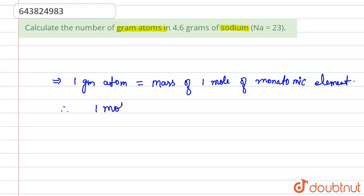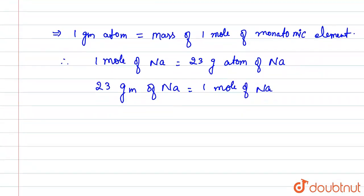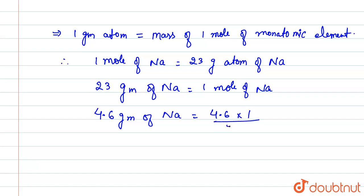Therefore, 23 grams of sodium (Na) is equal to 1 mole of Na. Now, the question is asking for 4.6 grams of Na. So, 4.6 grams of Na equals 4.6 multiplied by 1 divided by 23, which gives us 0.2 moles.